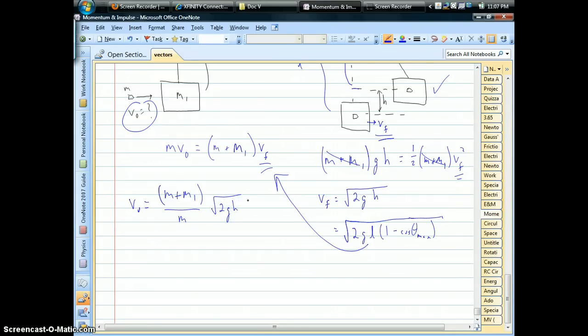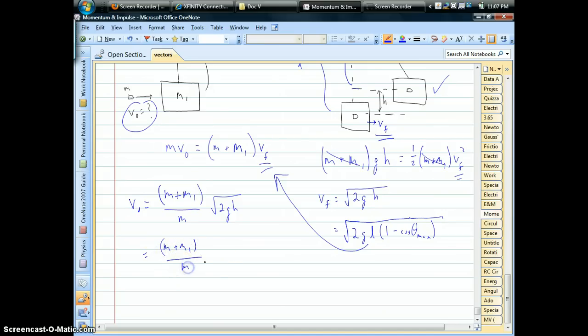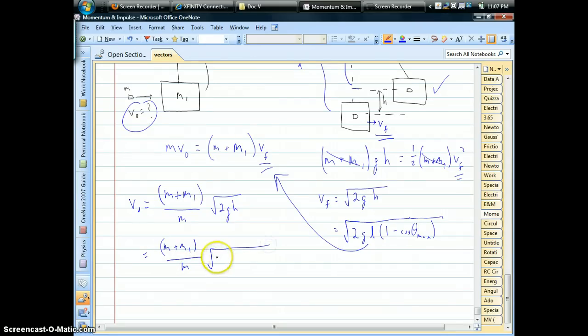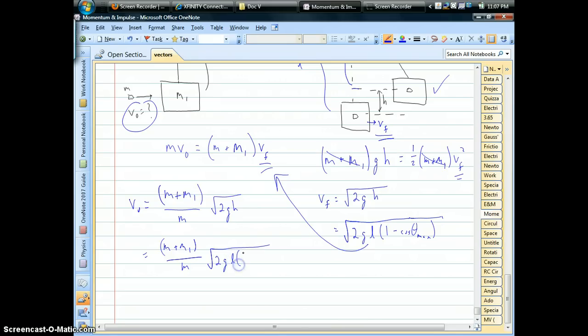So depending on which version we know, we could plug in the square root of 2gh. Or we could plug in, if all we know and measure is that angle, 2 times gravity times L, 1 minus the cosine of that angle.